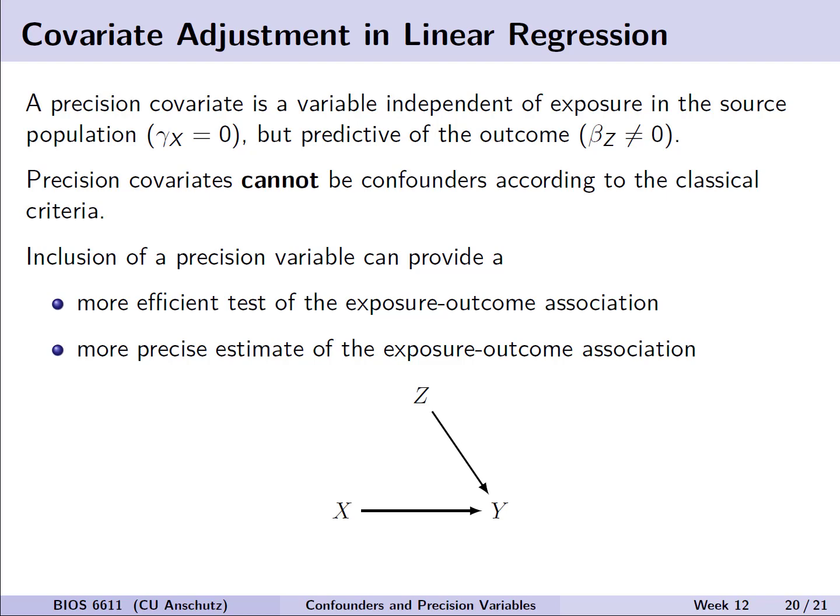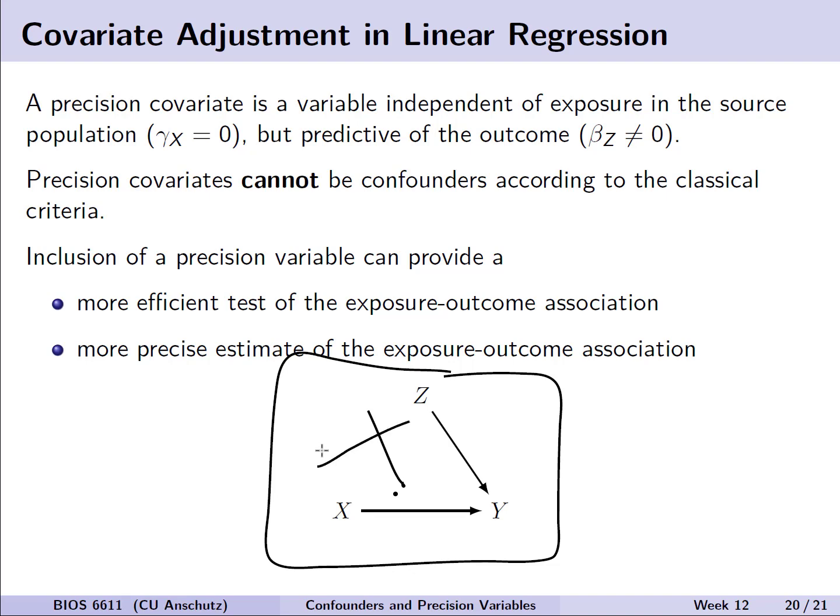In the context of linear regression, a precision covariate is a variable assumed to be independent of exposure in the source population — in other words, gamma x would equal zero. However, it is still predictive of the outcome, so beta z would not equal zero. In the DAG, there is no arrow between x and z. Precision covariates therefore cannot be confounders by definition. Inclusion of a precision variable can still be efficient because it leads to a more precise estimate of the exposure-outcome association.